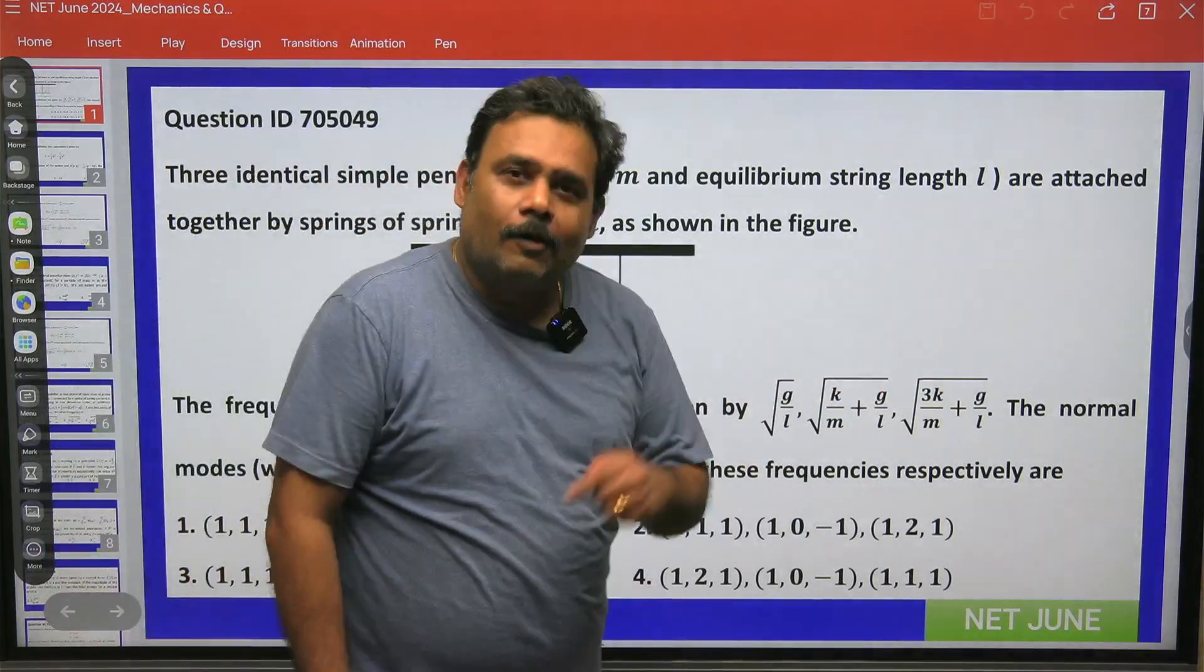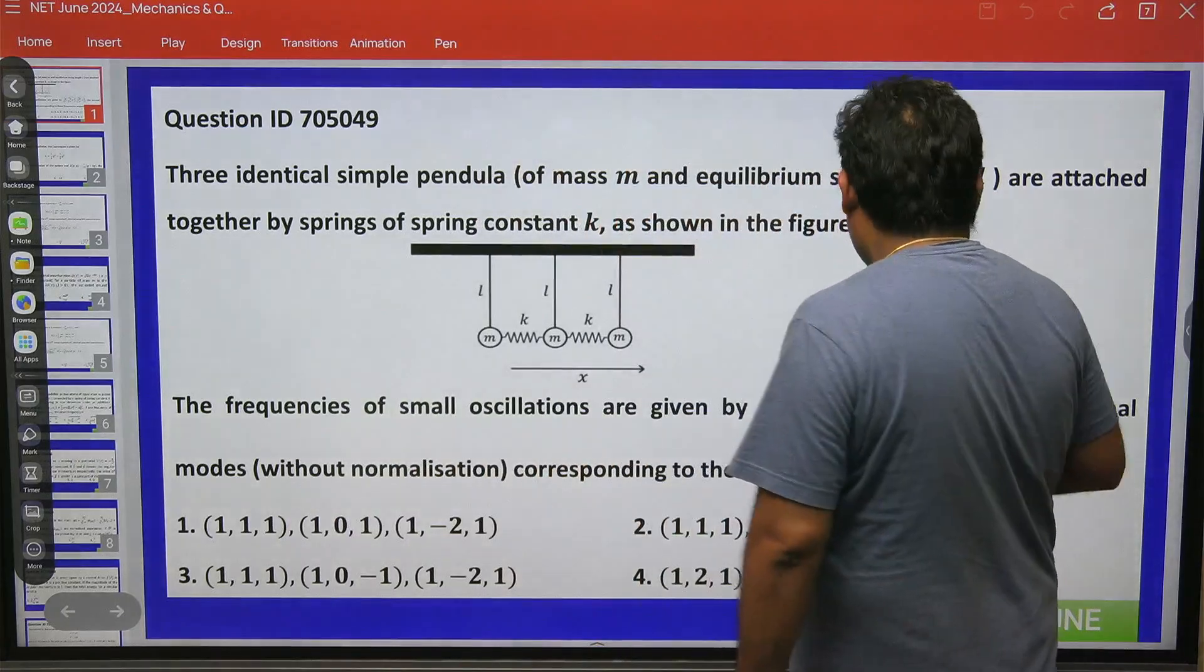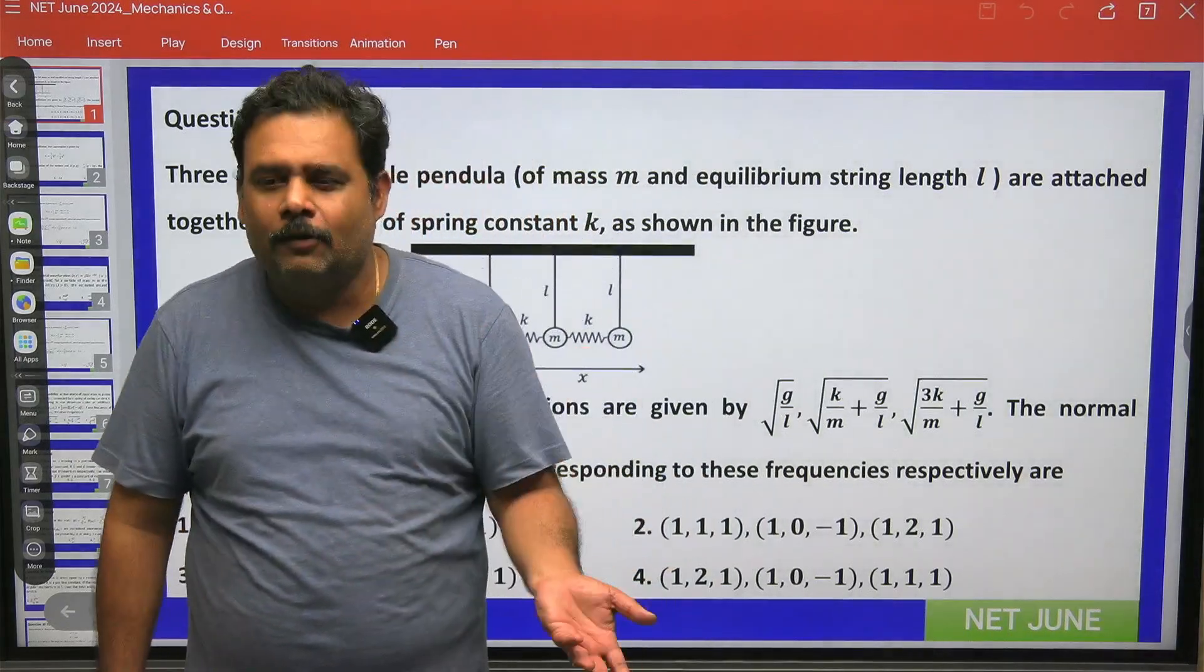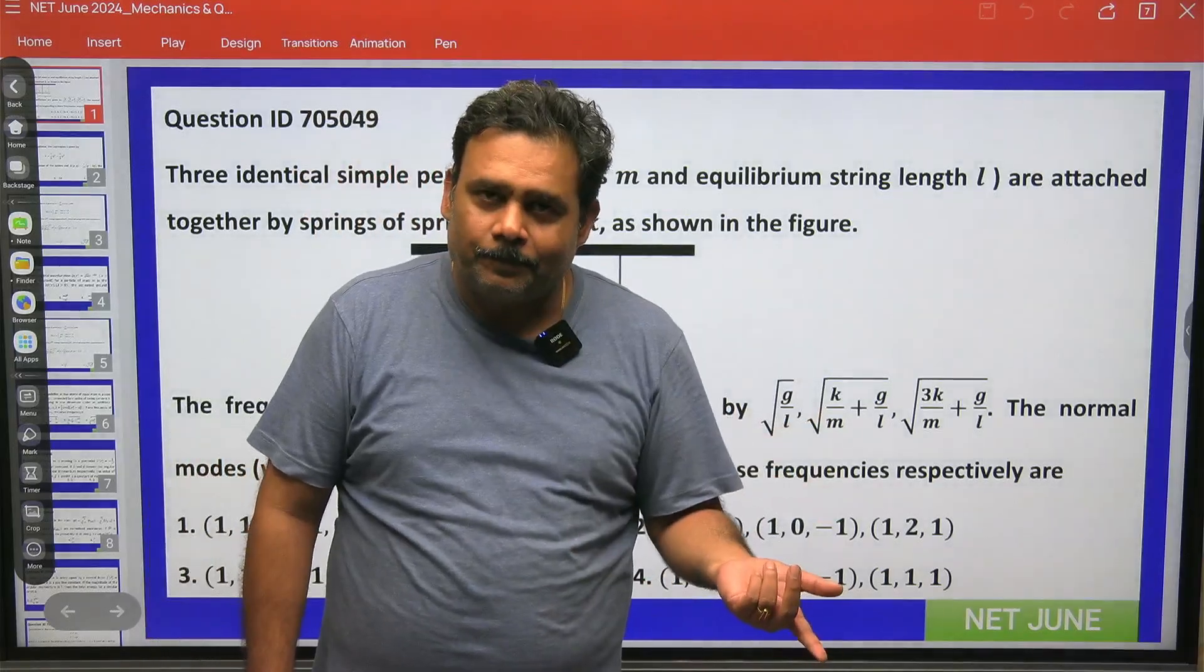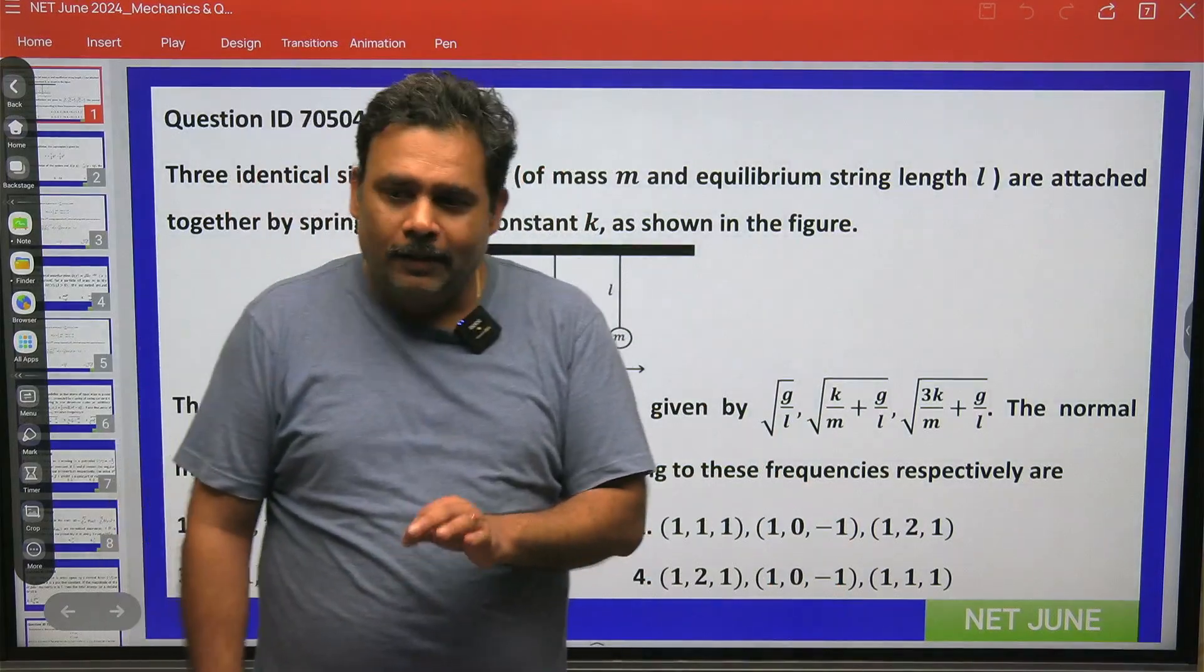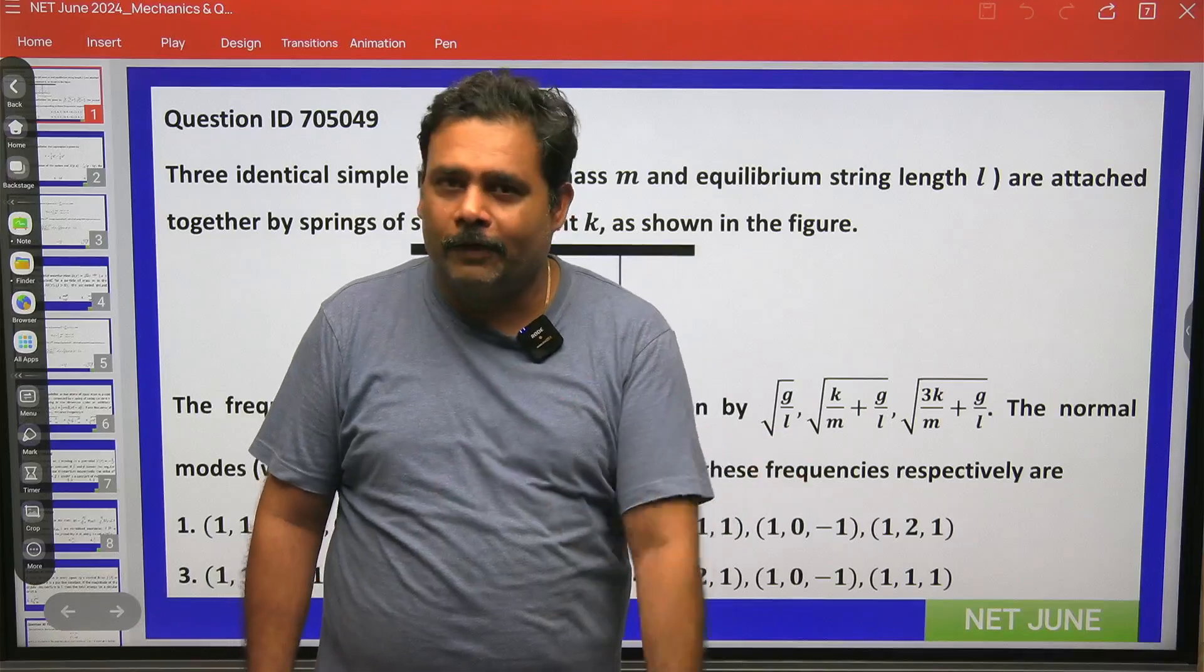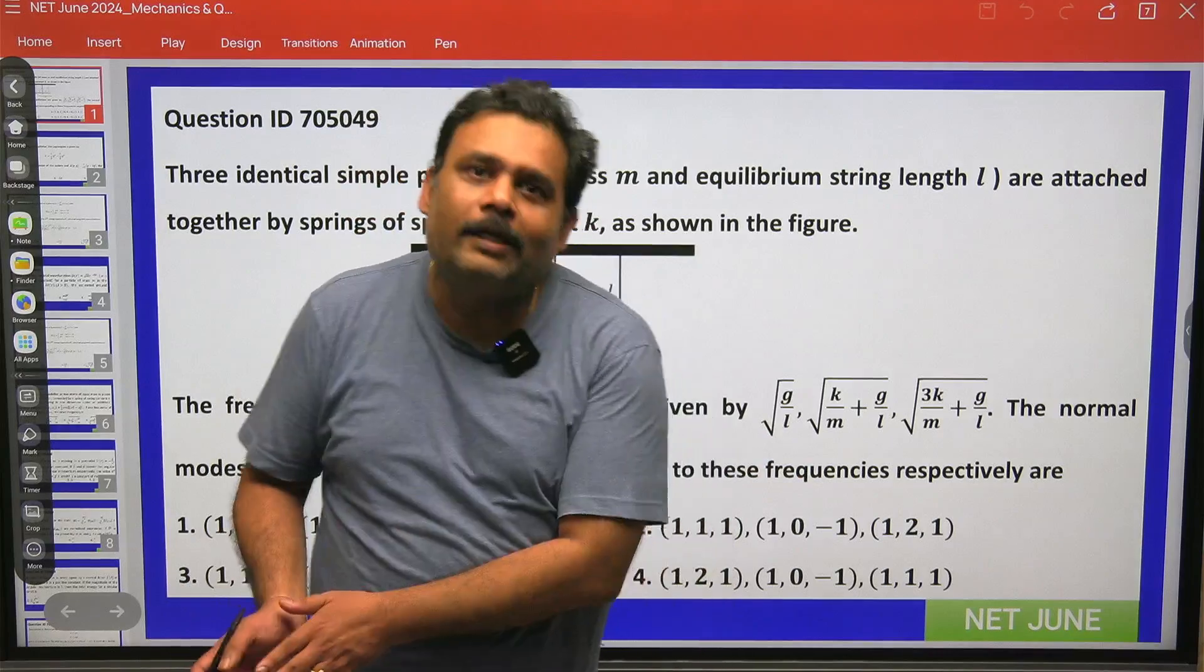To get the normal mode, what we will do, I will just ignore the G by L part. Why is the G by L part coming? Due to the pendulum, due to gravity, and this will just change only the normal frequency. And if you remember in your classical theory, we have solved all these particular normal modes and the normal frequencies of triatomic molecules.